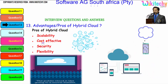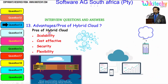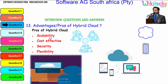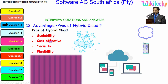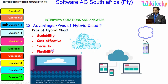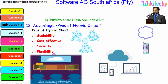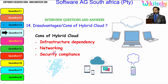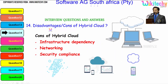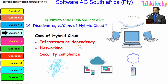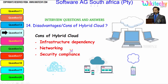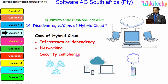If you talk about the pros and cons — or advantages — of a hybrid cloud, it is scalable: you can extend it as much as you can. It is cost effective, secure, and you get more flexibility. These are the major advantages of hybrid cloud. As for the disadvantages, there are major infrastructure dependencies, networking dependencies, and security compliance dependencies.